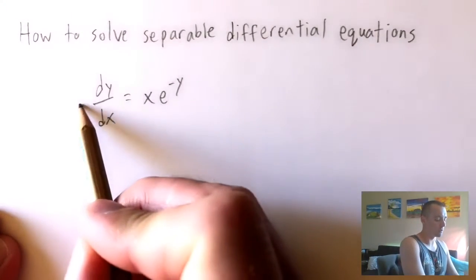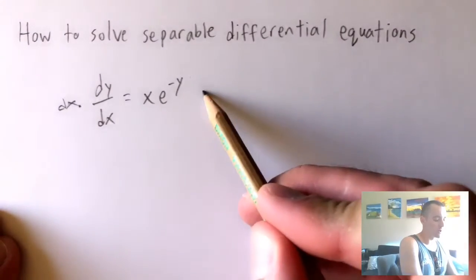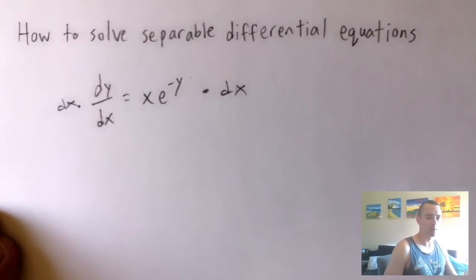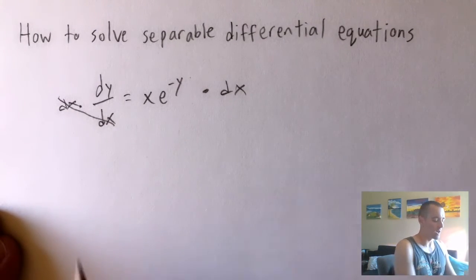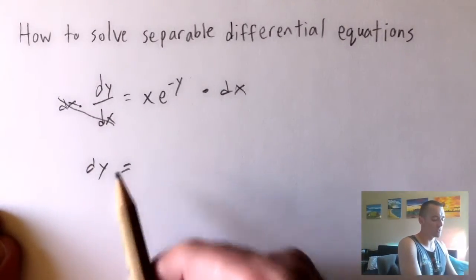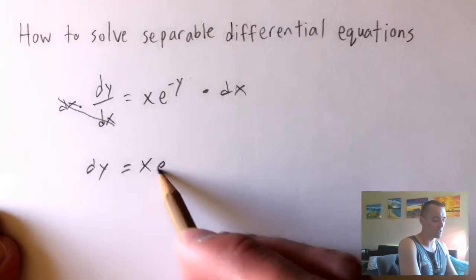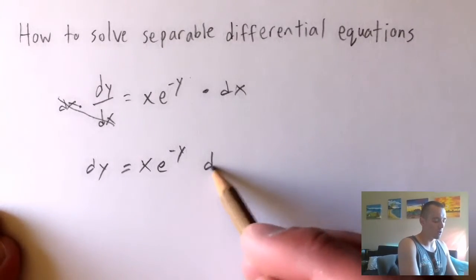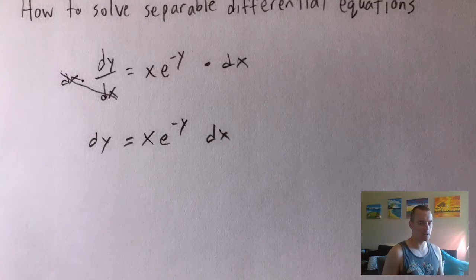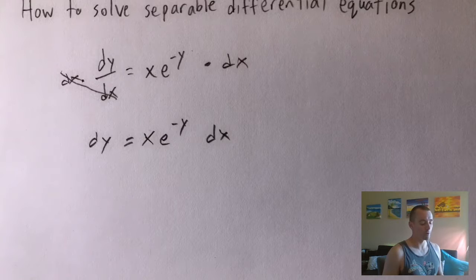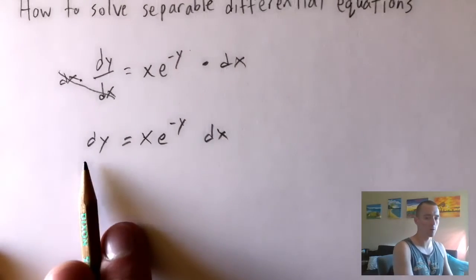What we want to do first is multiply both sides of our equation by dx. That is going to cancel the dx on the left, and we'll just be left with dy on the left side. On the right side we'll have x times e to the negative y, all times dx. Now we have dy by itself on the left, and on the right side we have some x's and some y's — an x, a dx, and also a y — so we want to get that y over to the left side where the dy is.